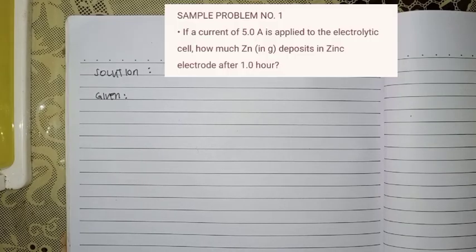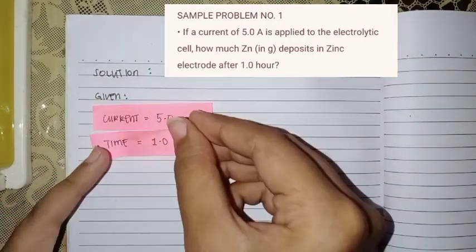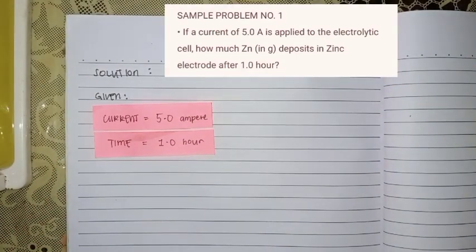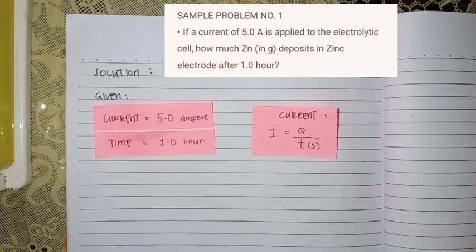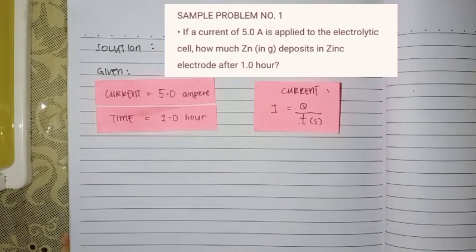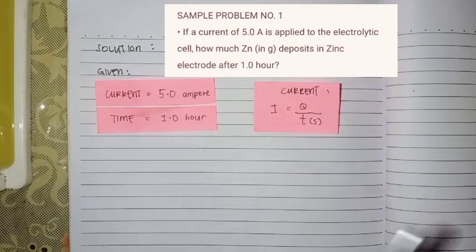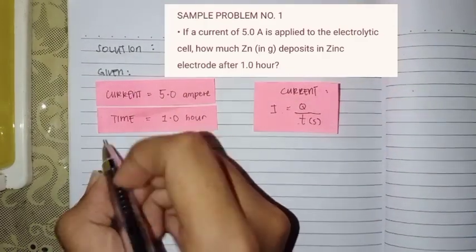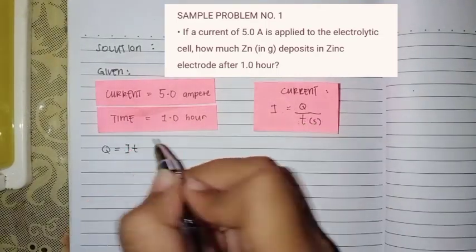This is the solution to our first problem. In this problem, we have the given current which is 5A and time which is 1 hour. The first formula we will use is current. Current equals charge over time. Q is the symbol for charge. Since we have I, which is the current of 5A, and T, which is 1 hour, we will make this simpler.